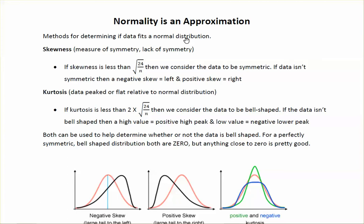Some of the ways we can tell this: first is skewness, which is a measure of symmetry or a lack of symmetry. You'll be given a skewness value — we're not going to have you calculate it. You compare that value to see if it's less than the square root of 24 over n. If it is, then we consider the data to be symmetric.